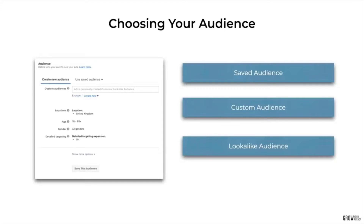Next is custom audiences. These can be created from a number of different sources, such as people who have visited your website, people who have engaged with your Instagram page, or even people who watched one of your videos. This is used in the retargeting element of a campaign. Remember, we have three different campaigns: cold, retargeting, and testing — and custom audiences will be used in the retargeting campaign.